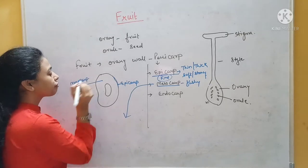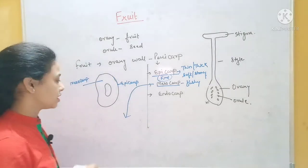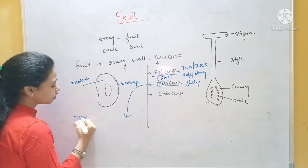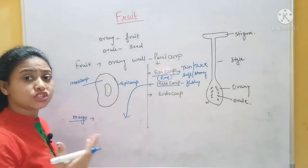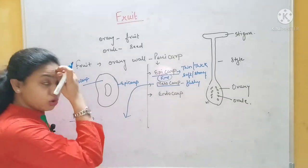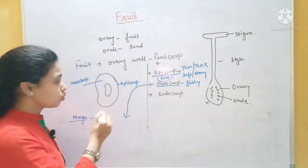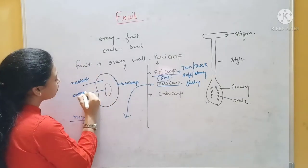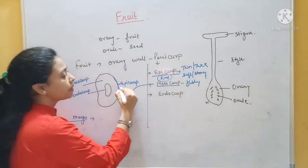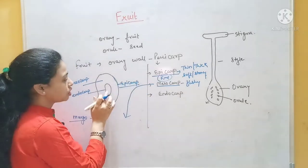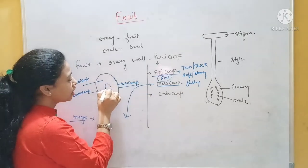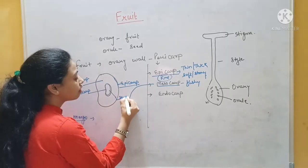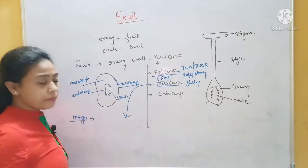Under the mesocarp is the endocarp. And the epicarp is the outermost covering. Under the endocarp, what is this? This is the seed. So in mango, the structure goes: epicarp (outermost), then the fleshy juicy mesocarp, then the endocarp, and inside is the seed.